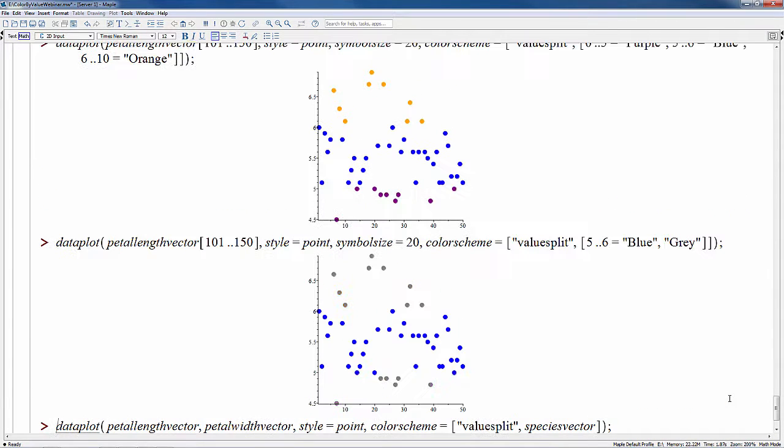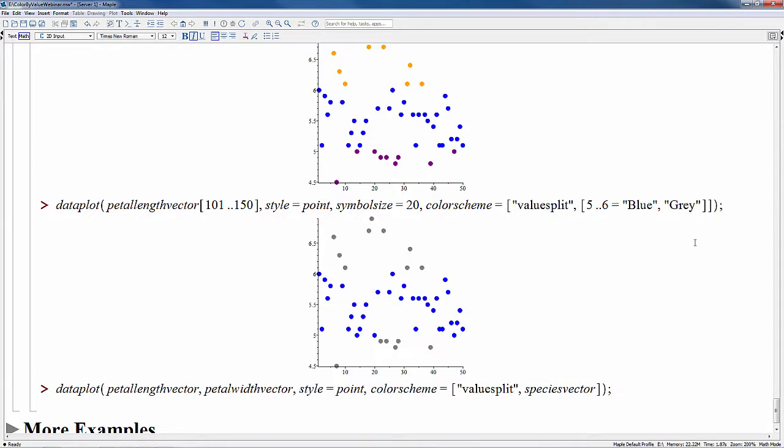In this second example, we have our mapping here where we say that all values between 5 and 6 get the color blue but everything else gets the default color of gray. So this is the way the color scheme feature works. Matches are attempted and if no match occurs with the left hand side of the equations, then a default color is used. And if no default color is specified by the user, then a color of black is assumed to be the default.